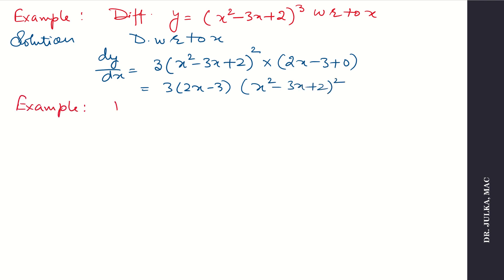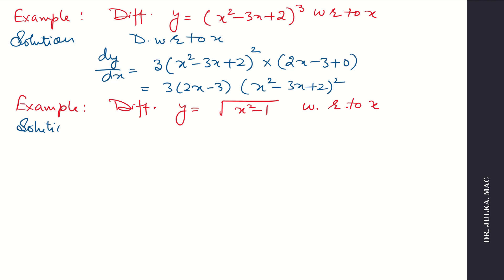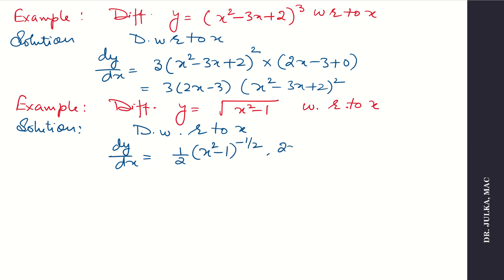One more example using power-function-angle approach: differentiate y equals root of (x square minus 1). Here power is 1 by 2 and the function is (x square minus 1). Differentiating with respect to x: dy by dx equals 1 by 2 times (x square minus 1) raised to the power minus 1 by 2, multiplied by derivative of the function which is 2x. So the answer is x divided by (x square minus 1) to the power 1 by 2, i.e., x divided by root(x square minus 1).